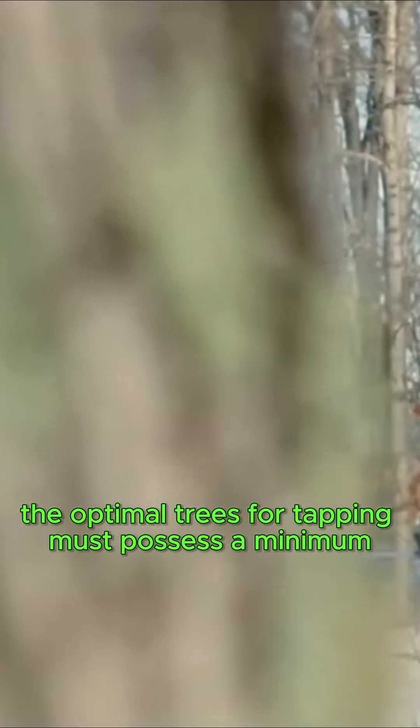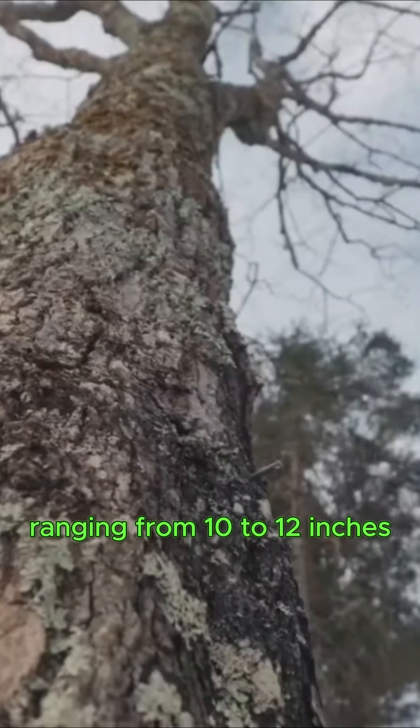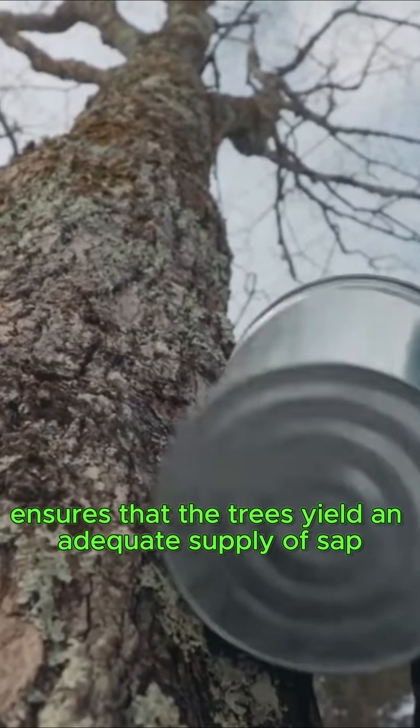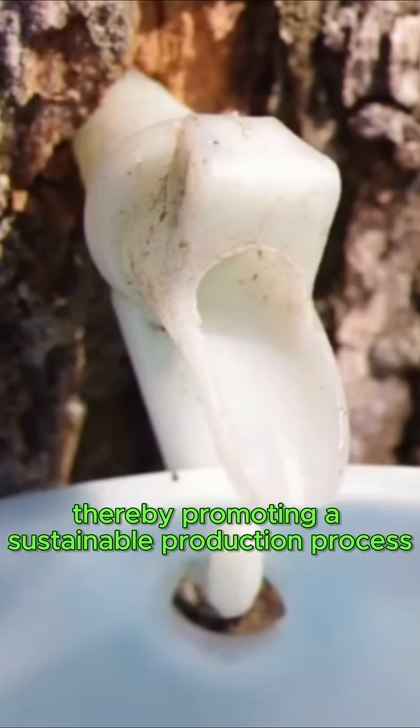The optimal trees for tapping must possess a minimum age of 40 years and exhibit a trunk diameter ranging from 10 to 12 inches. This ensures that the trees yield an adequate supply of sap, thereby promoting a sustainable production process.